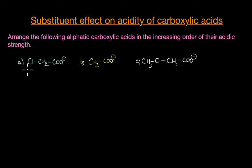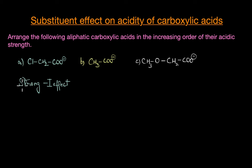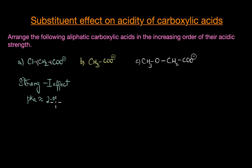Let's look at chloroacetic acid. Chlorine is a very strong electron withdrawing group due to its high electronegativity, and because of that it exerts a very strong minus I effect. As a result, it pulls electron density away from the carboxylate group and thereby stabilizes the anion. Because of this stabilizing effect, chloroacetic acid is highly acidic — it has a pKa value of around 2.86.